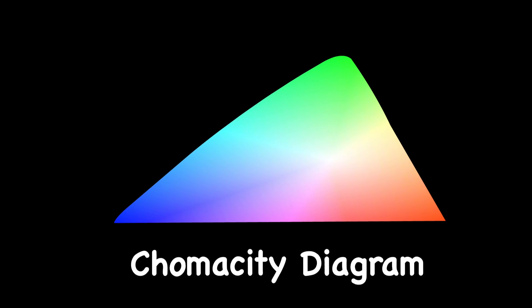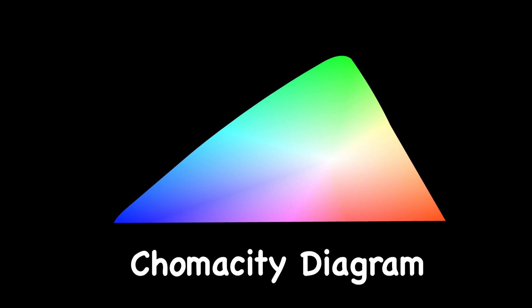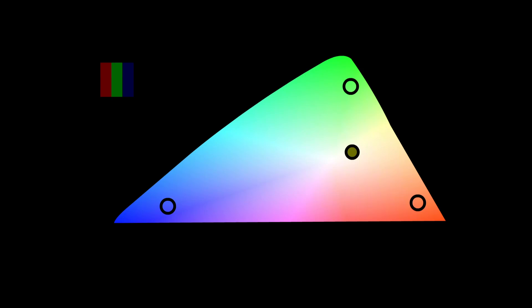By the way, this full representation of all colors with brightness held constant is called a chromaticity diagram. Now that we can see all possible colors, let's look for the ones which the subpixels on your screen show. They should be around here, here, and here.